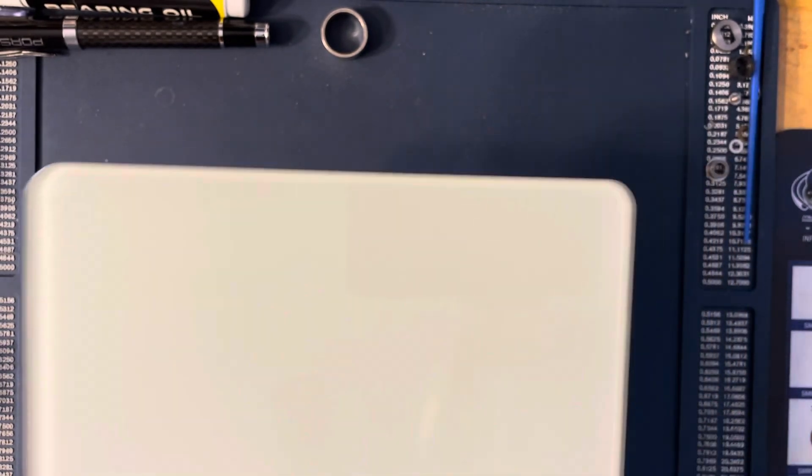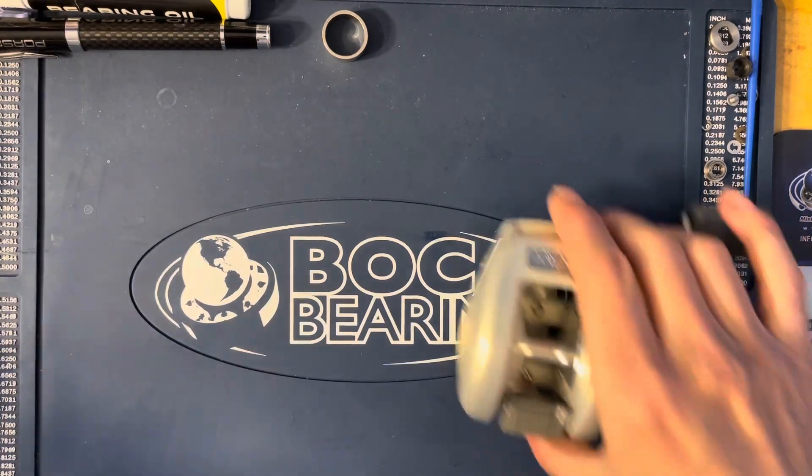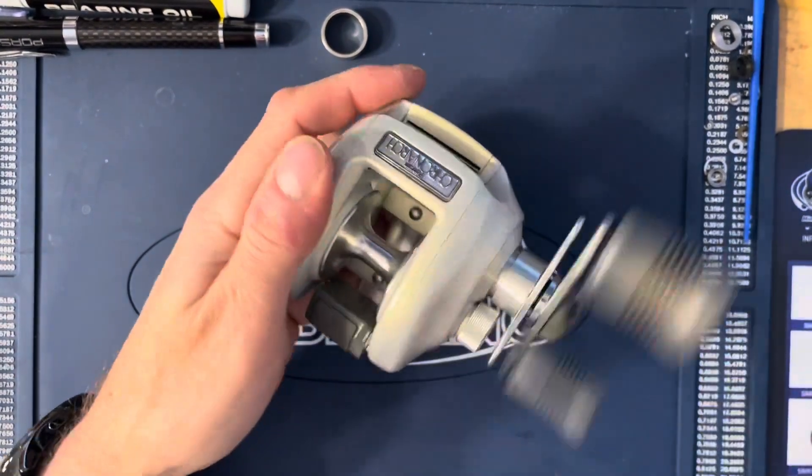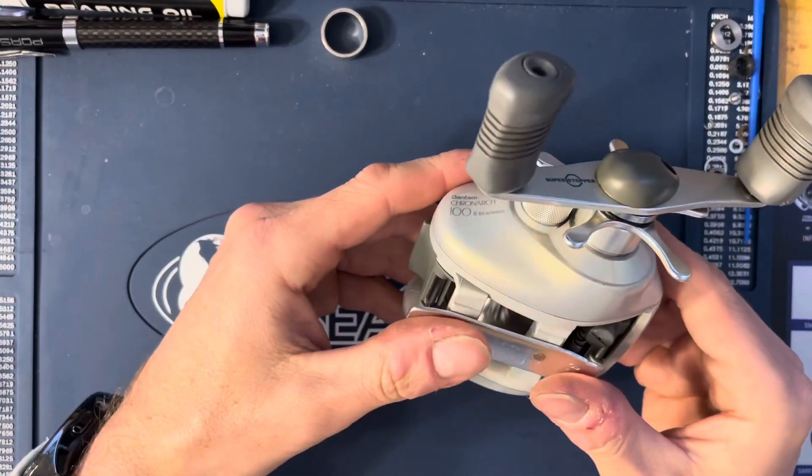For some reason it doesn't want to read what's going on. Anyway, I think this weighed 7.7 ounces, seven and a half ounces, so not the lightest reel, but it's an absolute tank, it's an absolute beast. Durability wise, it's an absolute gorgeous reel, super smooth.